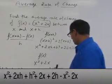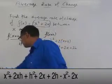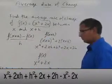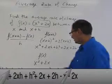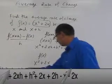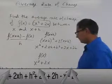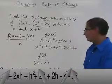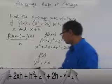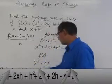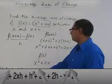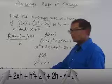x squareds and x squareds cancel because x squared minus x squared is zero. And 2x minus 2x cancel because 2x minus 2x is zero. So what you're left with is 2xh plus h squared plus 2h. So let's write that.